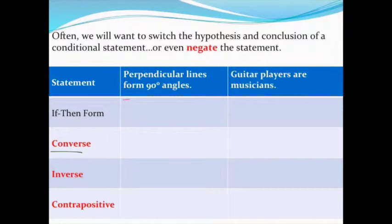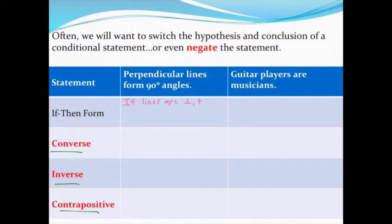Next we're going to work with the converse, the inverse, and the contrapositive. These take our if-then statements and switch things around — sometimes negating certain parts by adding the word 'not.' Let's take the statement 'perpendicular lines form right angles' and write it as an if-then statement: 'if lines are perpendicular, then they form 90-degree angles.'